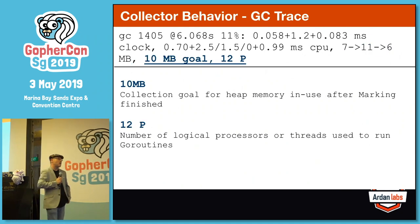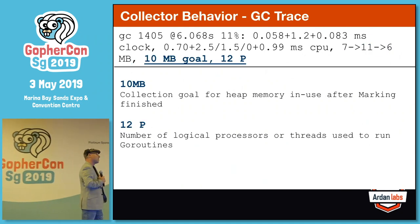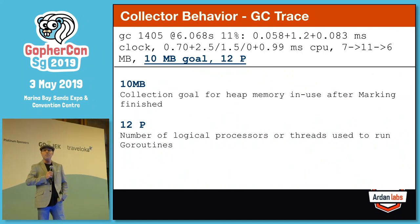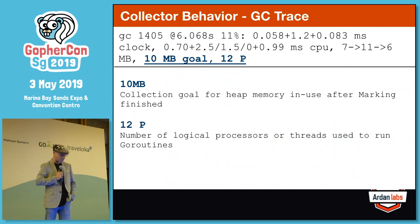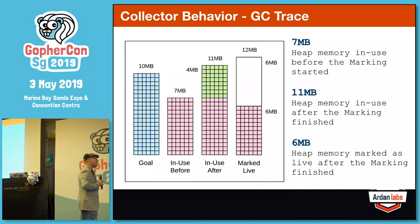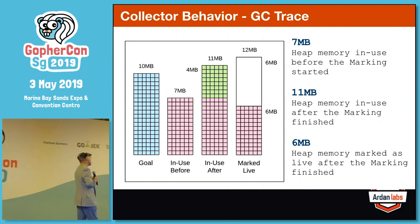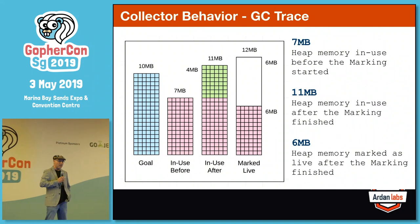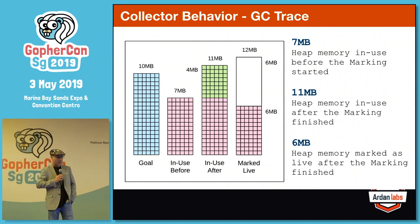Then there's the goal of the collector — before the collection even starts, the collector is trying to set a goal of what the heap should look like after the concurrent marking phase is done, figuring out how much more memory growth we'll end up having. You can also see that I'm running on twelve threads. Visually, the goal was ten — it went a meg over the goal — there were four megabytes of new allocations during the collection, and we end up with the ability to allocate another six meg before a collection has to start again.